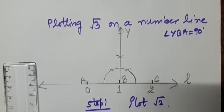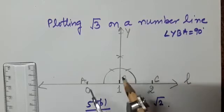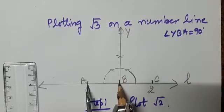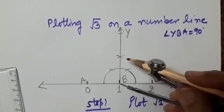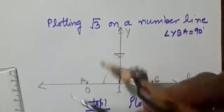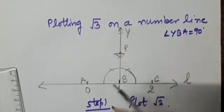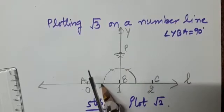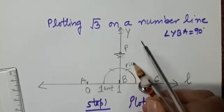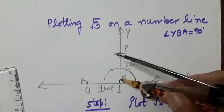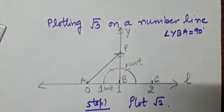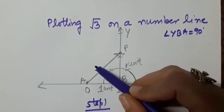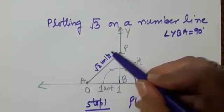We will take a point on ray BY such that AB equals BP, both equal to 1 unit. Let this new point be P. So AB is 1 unit and BP is 1 unit. When you join AP, you know that by Pythagoras theorem AP is square root of 2 units.